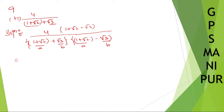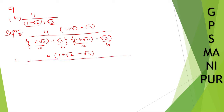So the numerator: multiply the whole thing by 4, giving us 4 times (1 plus root 2 minus root 3). Write down the numerator as it is. For the denominator, using (a plus b)(a minus b) = a squared minus b squared.